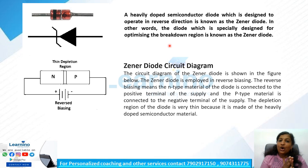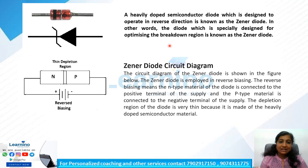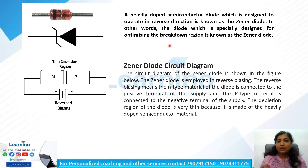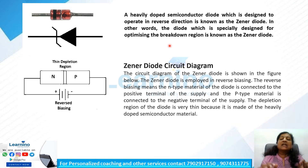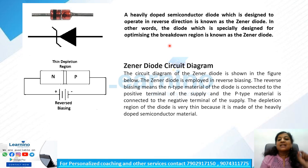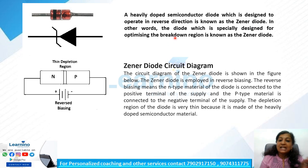The Zener Diode is designed to operate in the reverse direction. Normally we work with a PN junction diode, but the Zener Diode is operated in reverse bias condition. It is also heavily doped.